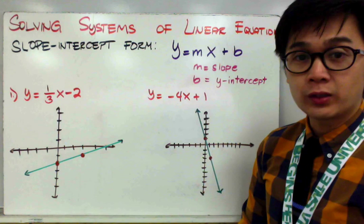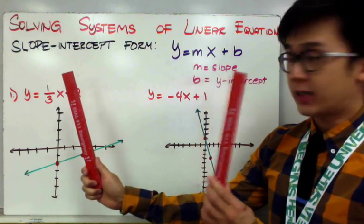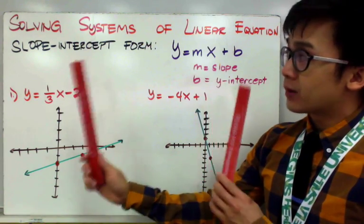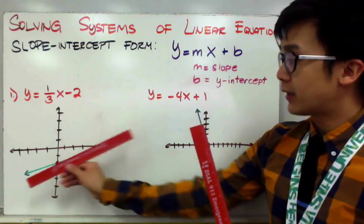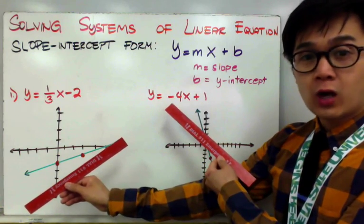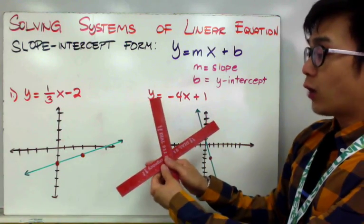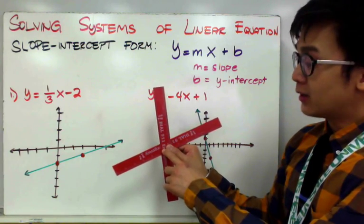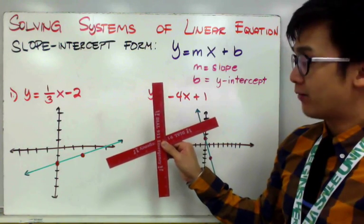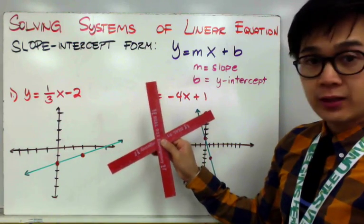Today we're going to solve systems of linear equations. We have this first line and this second line. When solving a system of linear equations using graphing, we graph both lines in one coordinate plane — the x-y plane — and determine where the two lines intersect. The point of intersection of the two lines is the solution of our linear system by graphing.